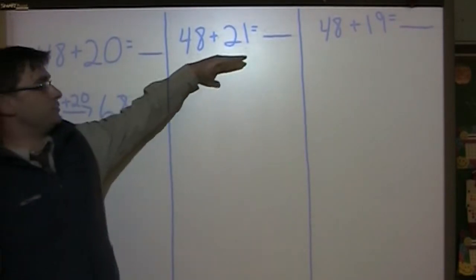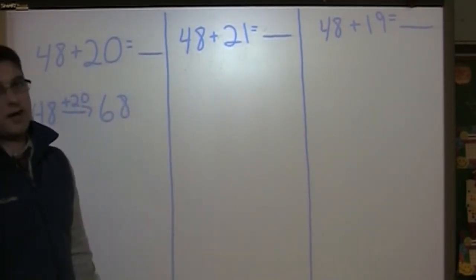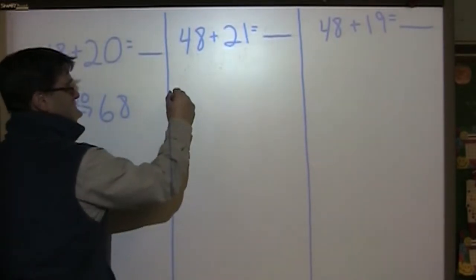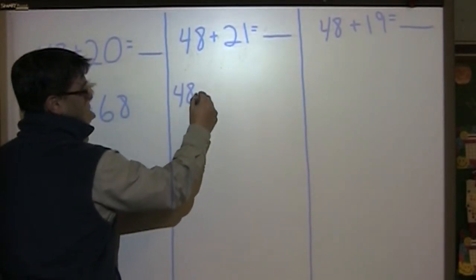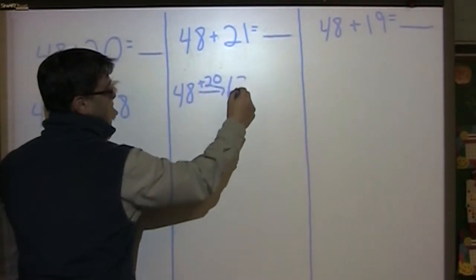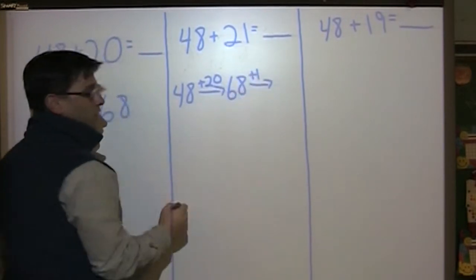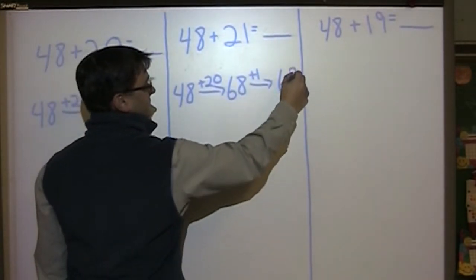And as we move on to some ones, we can still use the friendly number of 20 to help us add 21. So we have 48. We can do the arrow. We can still add 20 and get 68. And then we just add our one more to get 69.